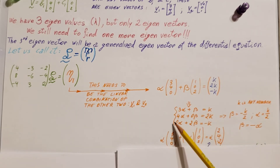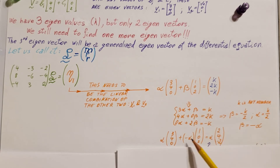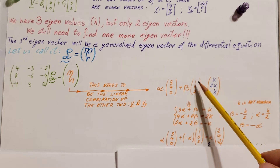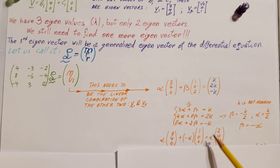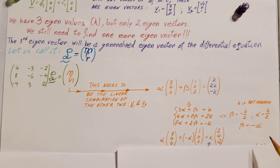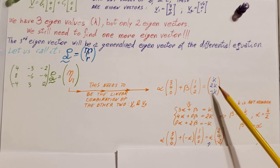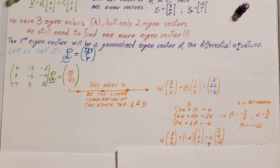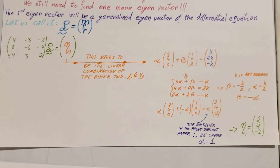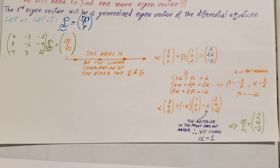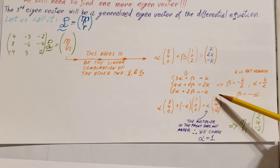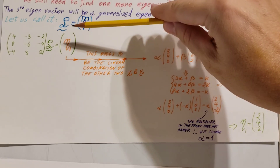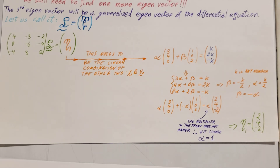Alpha times (3, 4, 0), plus — instead of beta I plug in negative alpha — and the vector (1, 0, 2) stays unchanged. Now, K we can solve from this: K equals 2 alpha. I'm going to factor out alpha, giving alpha times (2, 4, minus 2). The multiplier in the front we can drop, and we choose alpha equals 1. So eta1, what we've been looking for, will be (2, 4, negative 2).